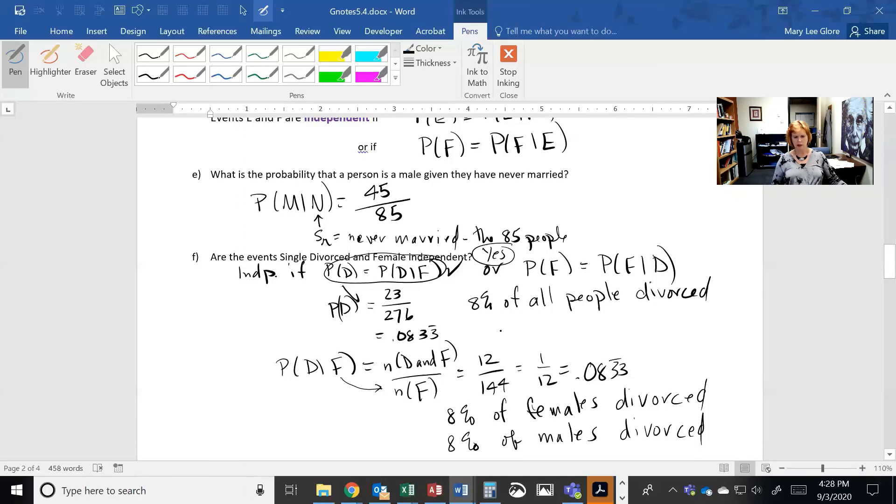So basically, what percentage are divorced? It wouldn't matter whether the person was male or female or not, it's 8% all the way across. All right. So for females, 8%, for all 8%. So letting me know if you're female or not is not going to affect that probability. That's what makes it independent.